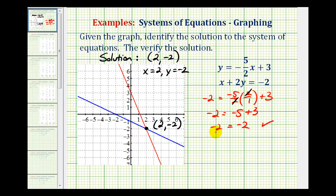Now we'll also check the second equation. For x plus two y equals negative two, we would have two plus two times negative two equals negative two. So we have two plus negative four equals negative two. And two plus negative four is negative two. So x equals two and y equals negative two does satisfy the second equation as well, which does verify our solution.